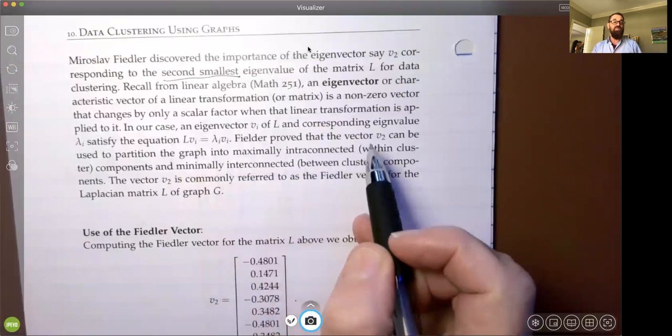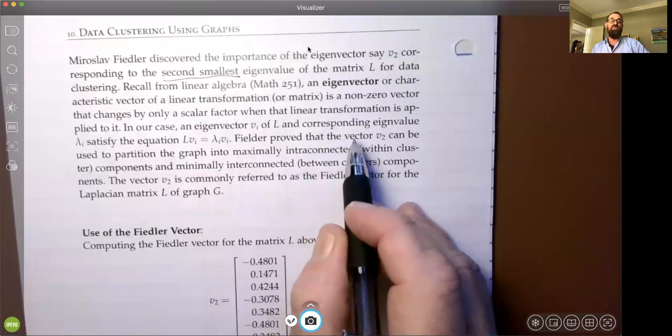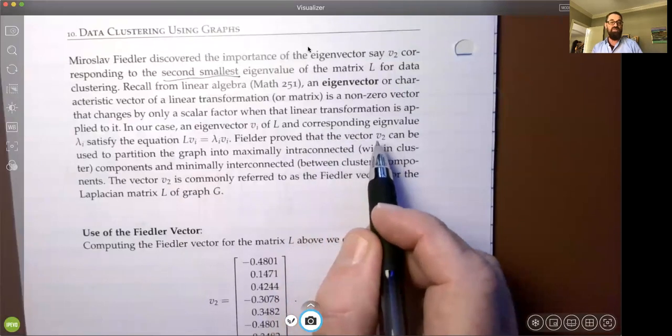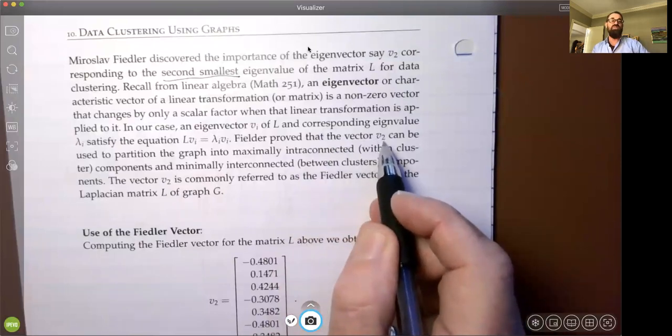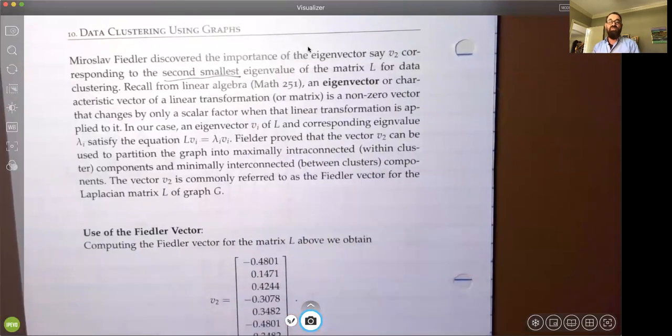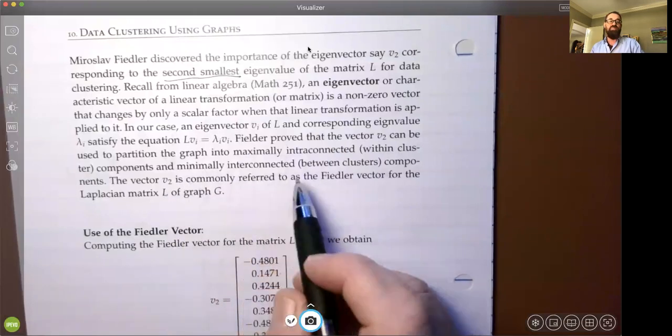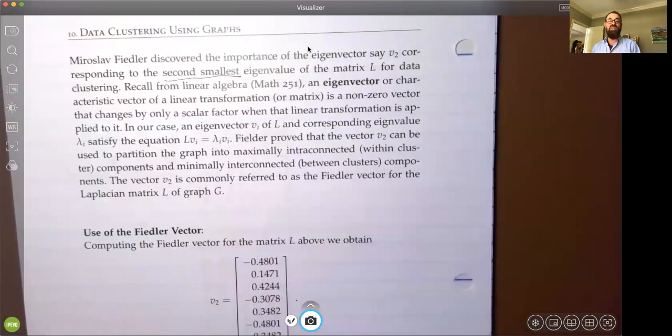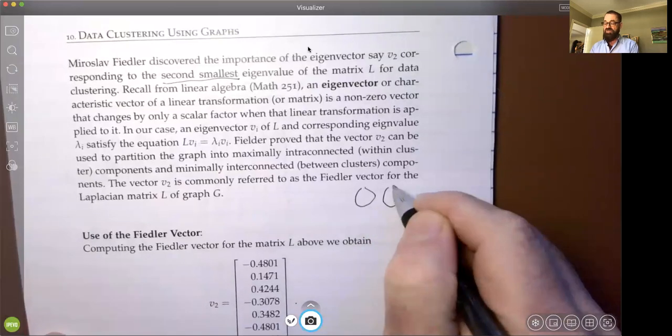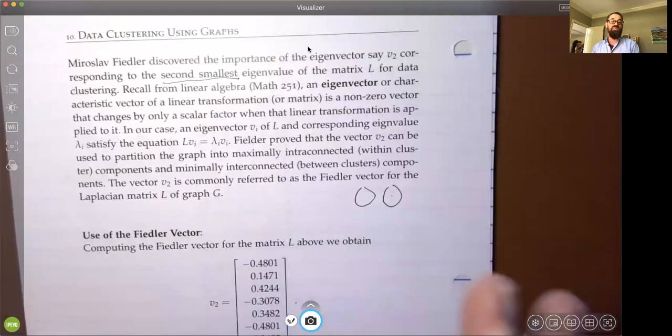Fiedler proved that the eigenvector corresponding to the second largest eigenvalue, called V2, can be used to partition the graph into maximally interconnected clusters. That means they're very cohesive, so they're very much more related within the cluster than outside the cluster. And they're minimally interconnected between clusters, so we're trying to get maximum separation and homogeneity within the cluster. We're trying to cluster the data so that the data inside a cluster is very much related, but very different from data in another cluster.